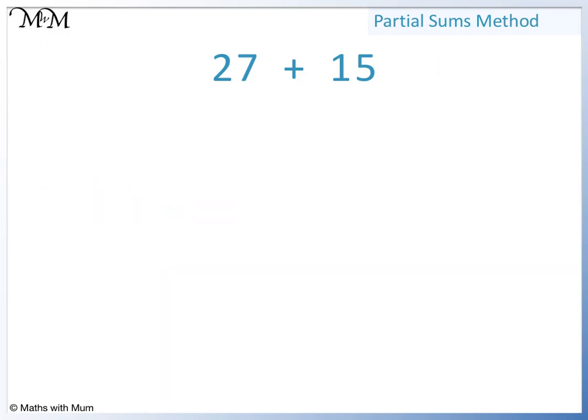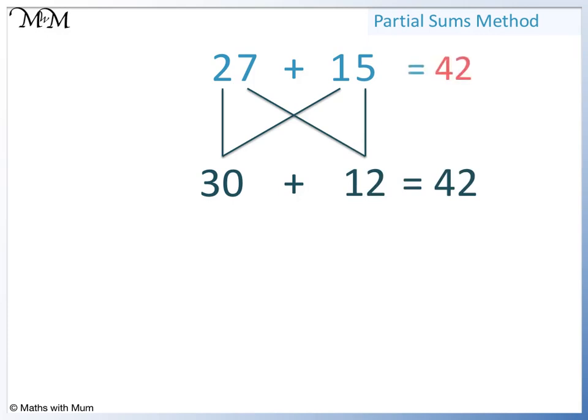Another way we can write this is like so. We add the tens: 20 plus 10 equals 30. We add the ones: 7 plus 5 equals 12. Then we find the total: 30 plus 12 equals 42. So 27 plus 15 equals 42.